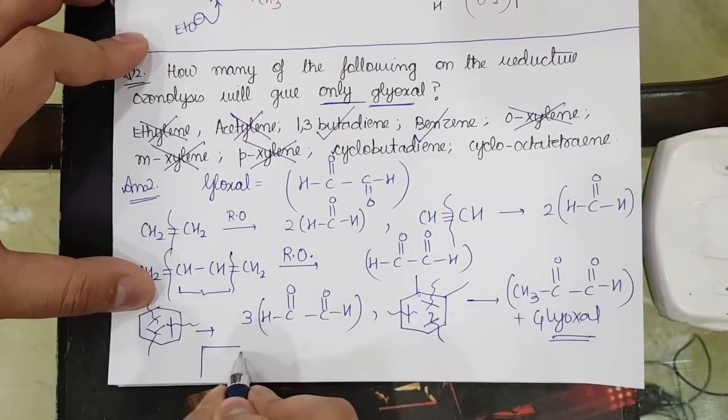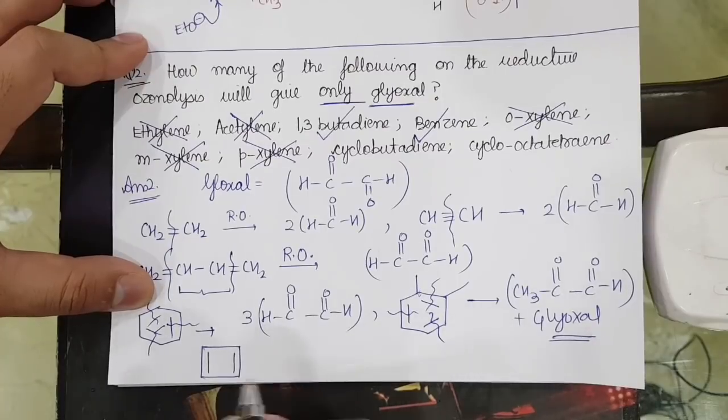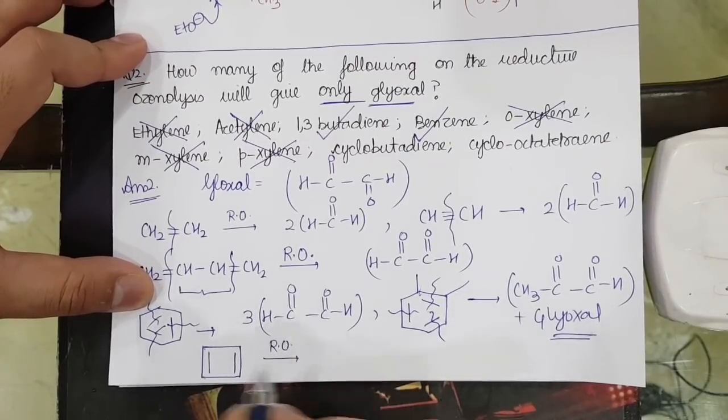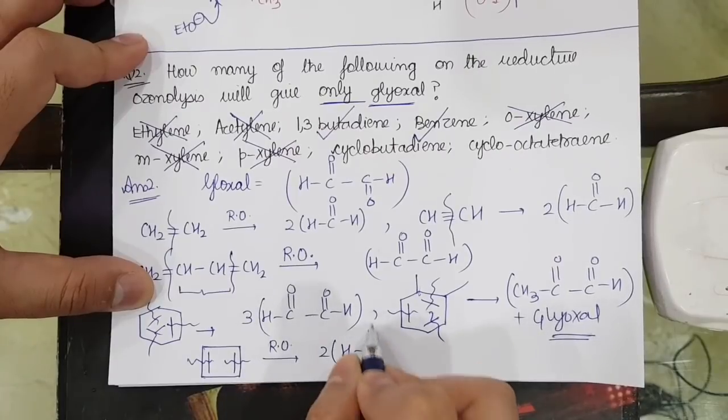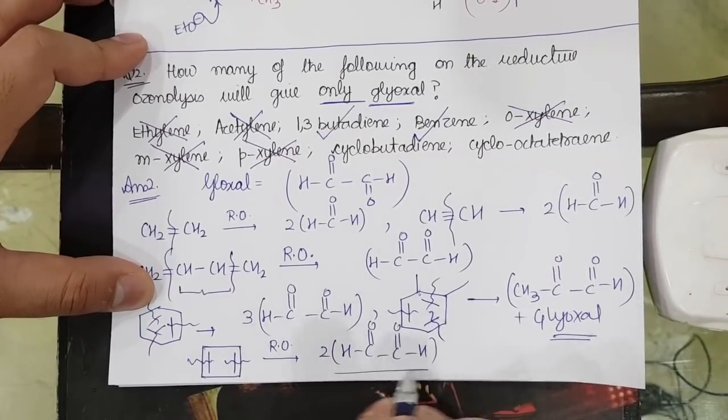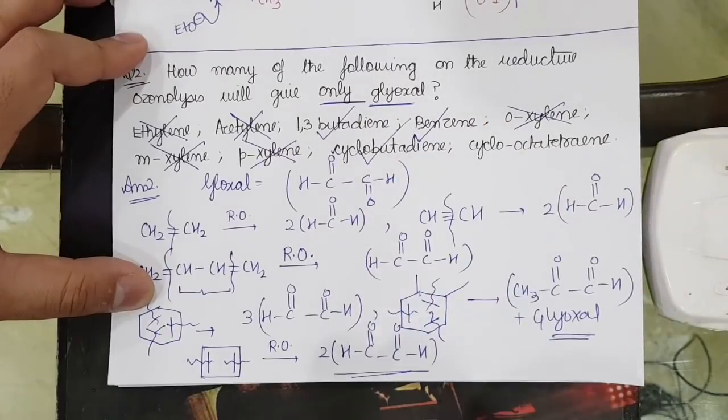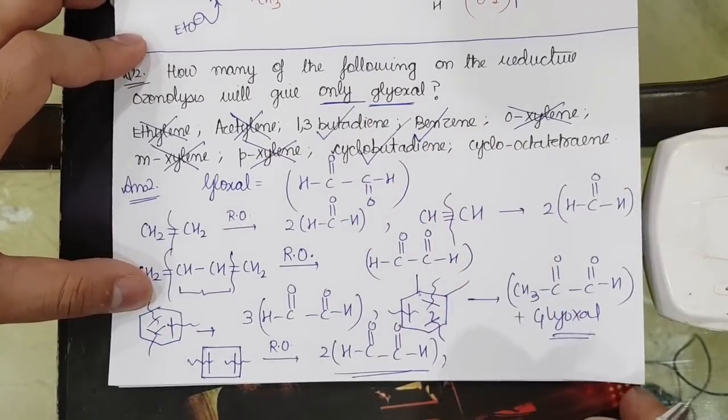If I take cyclobutadiene, which is this structure, and do reductive ozonolysis, break the bonds, I will get the formation of 2 moles of glyoxal. So 2 moles of glyoxal is forming. It means this will also give.